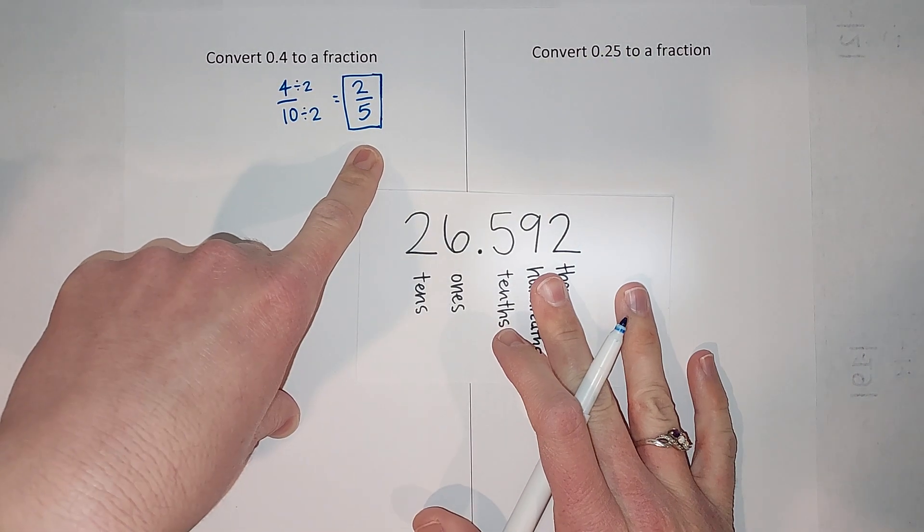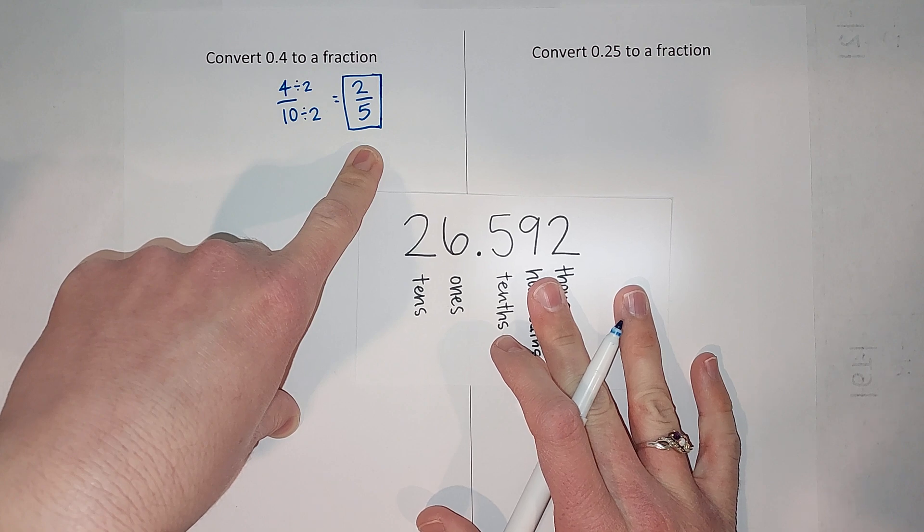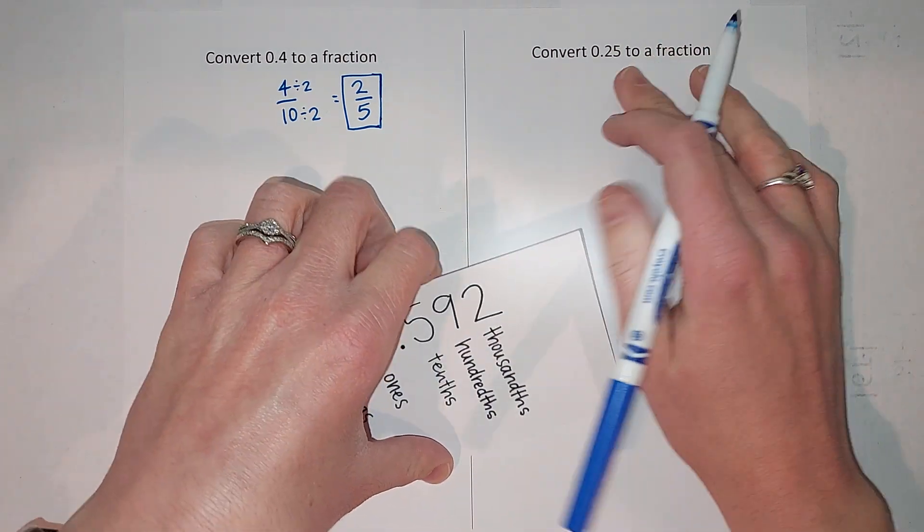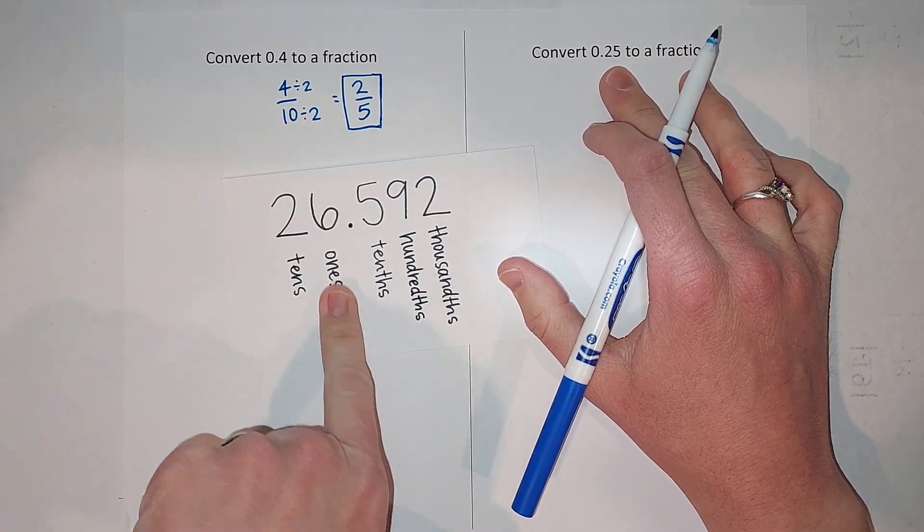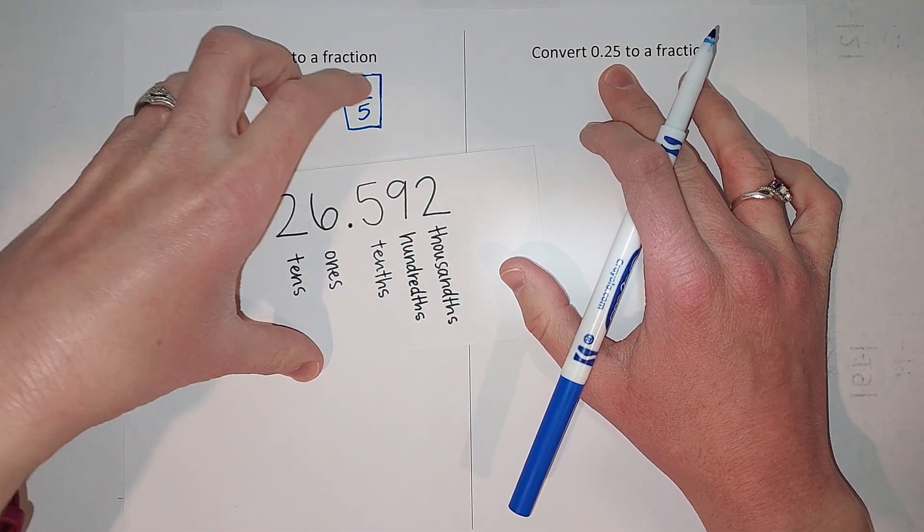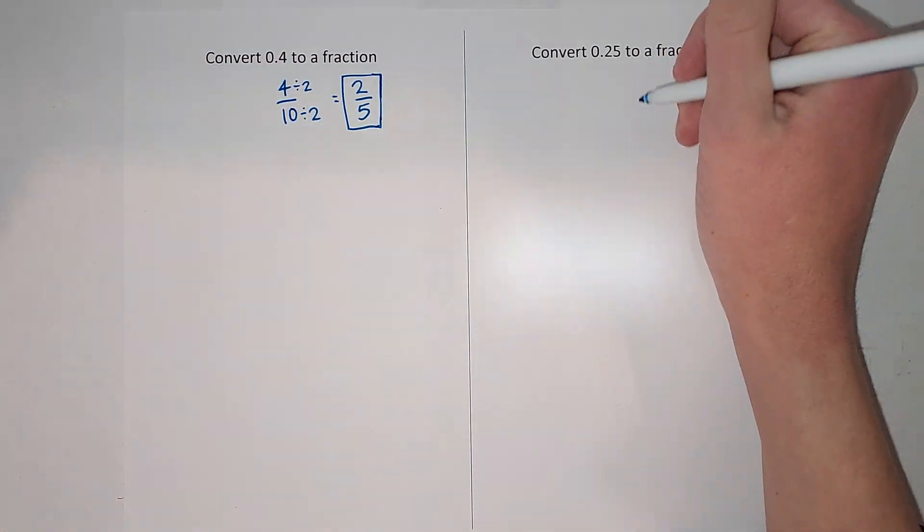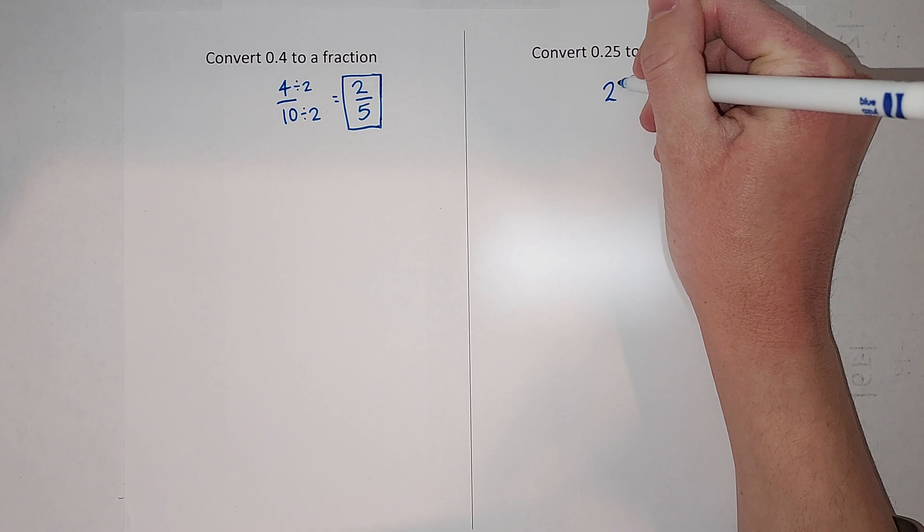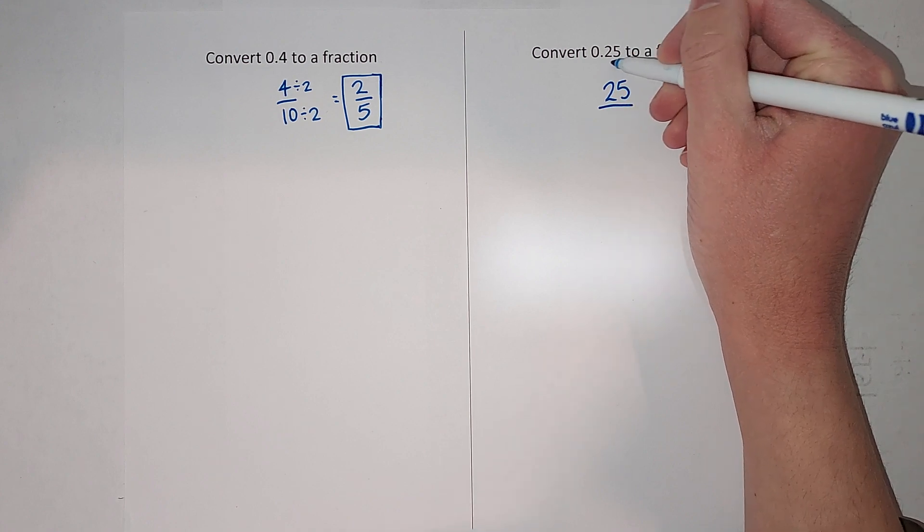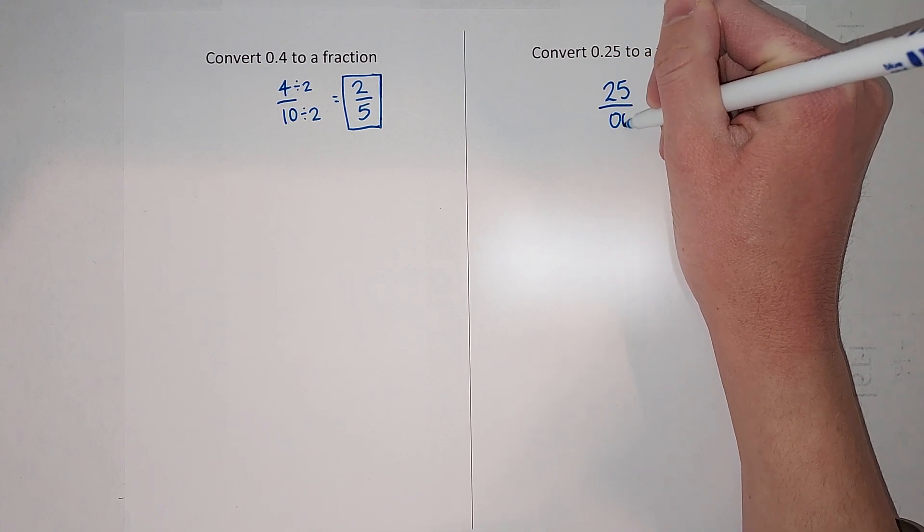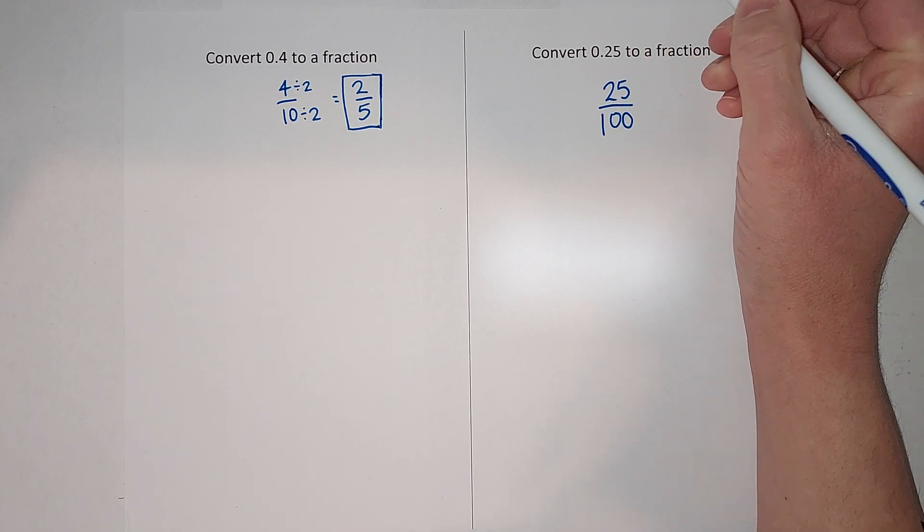the fraction is two fifths, the simplified fraction. All right, let's do it over here. So if we were to read this using our thing here, it would be 25 hundredths. So 25. I can also think of it as there's two numbers after the decimal place, so I'm gonna have two zeros and a one, so 100.